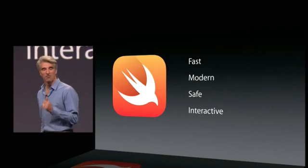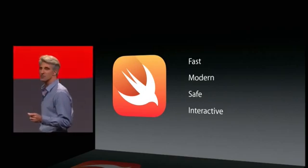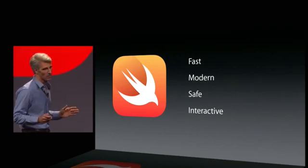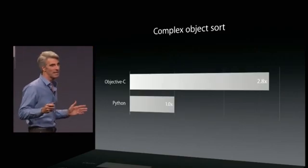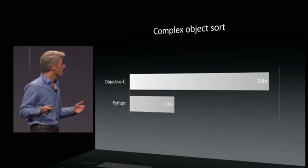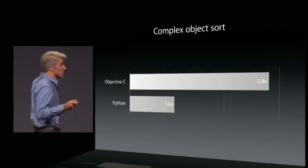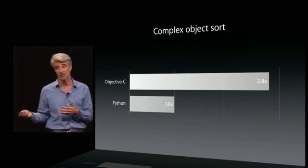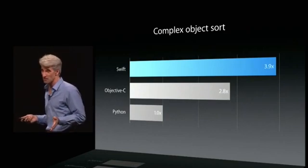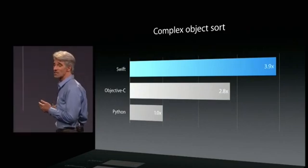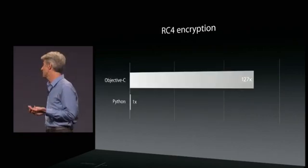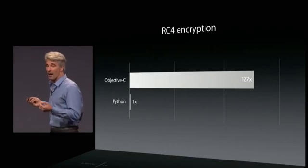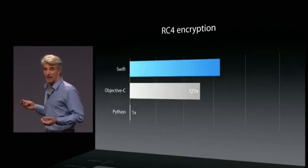Swift is fast. It is modern. It is designed for safety, and it enables a level of interactivity and development that you've never seen on the platform. When it comes to speed, compare Python, a popular scripting language, with Objective-C on something like complex object sort — Objective-C is a lot faster, but Swift is faster still. And take something like RC4 encryption, extremely computationally intensive. Python gets utterly crushed in this benchmark, and so does Objective-C. But look at Swift.